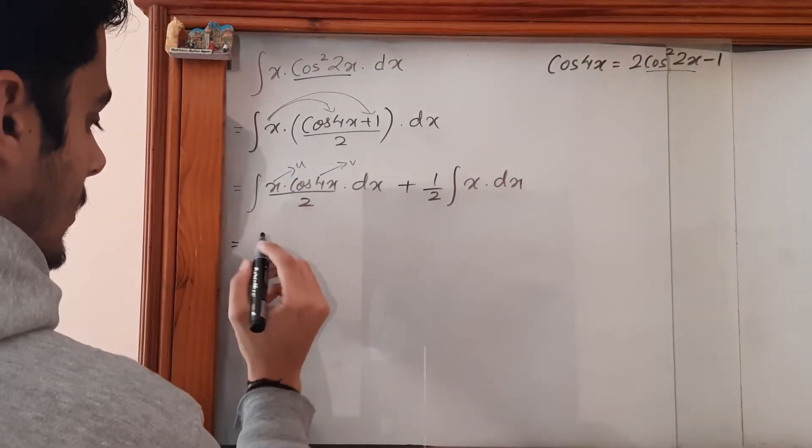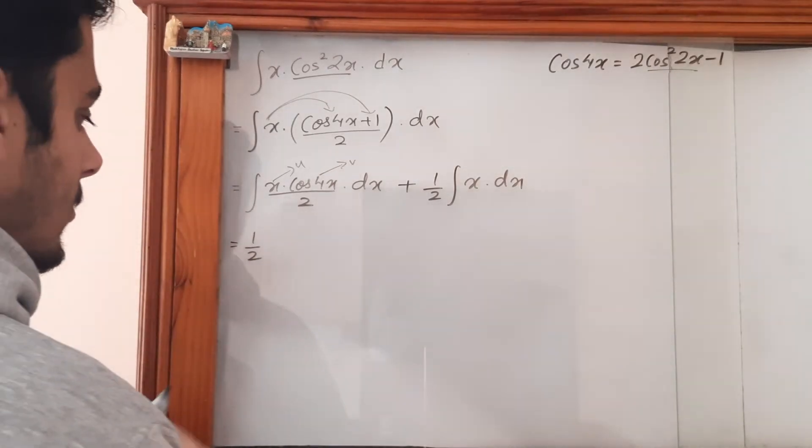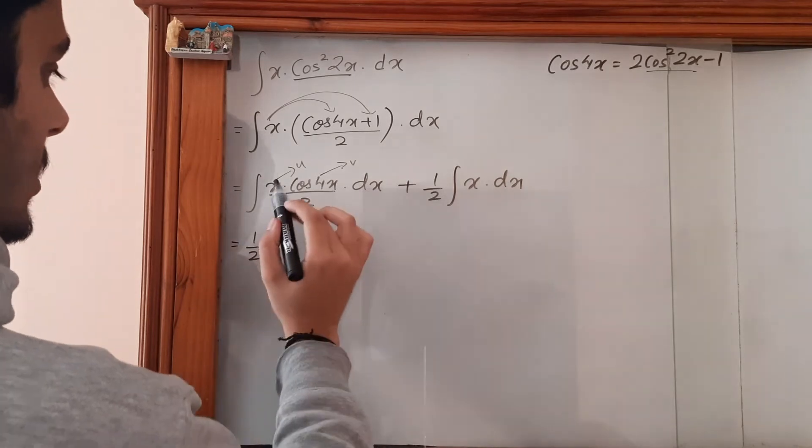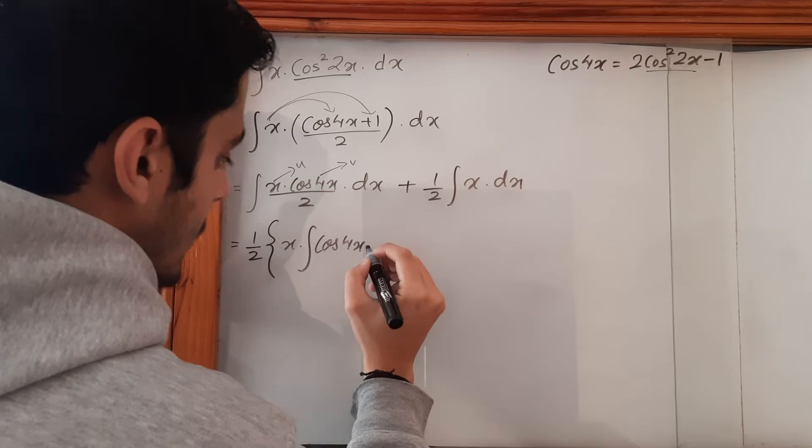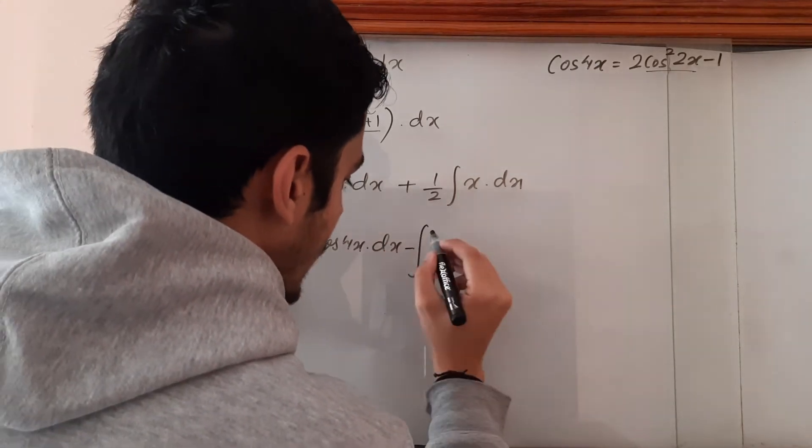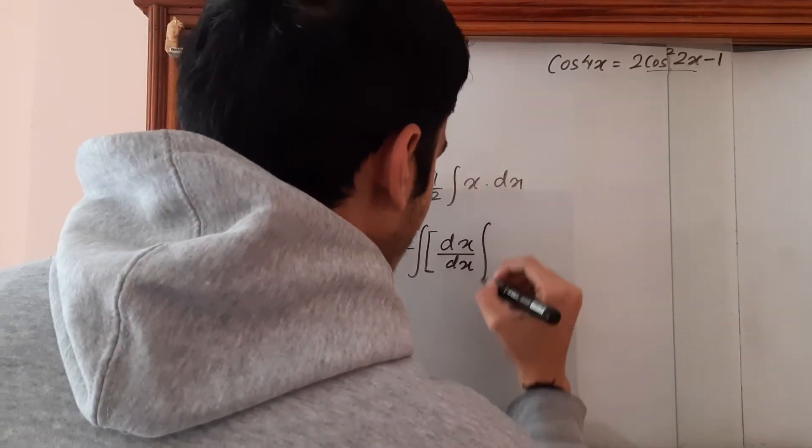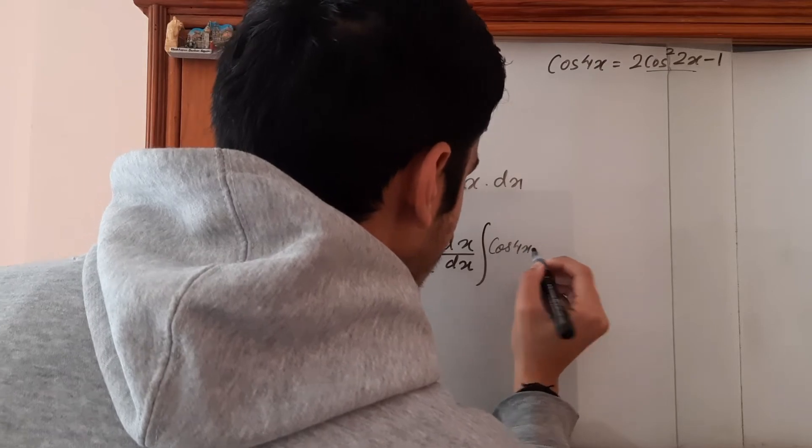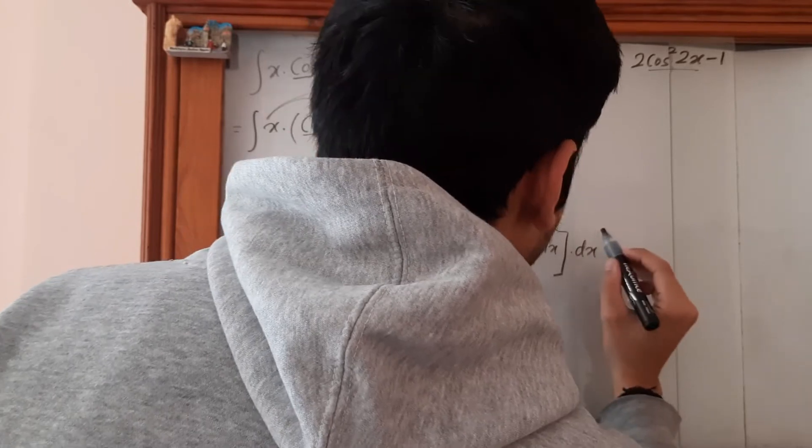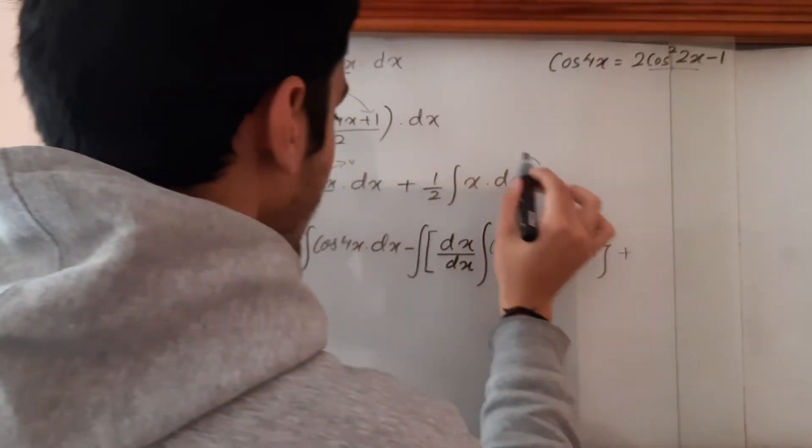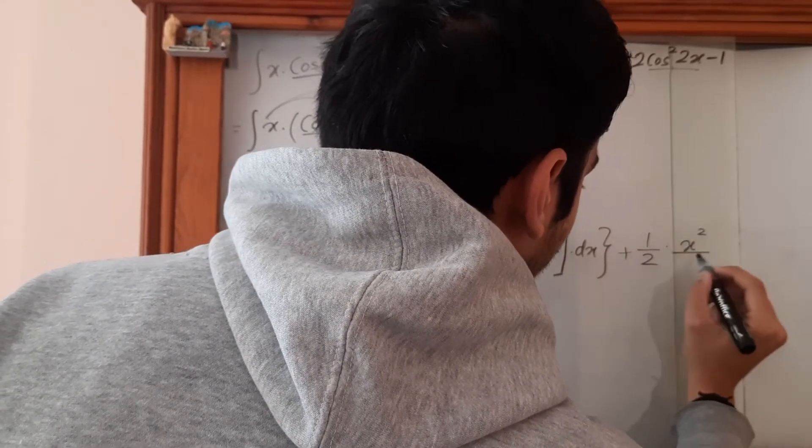So 1/2 comes outside and let's make curly brackets. This is u—it comes outside—times ∫cos(4x)dx minus ∫[dx/dx · ∫cos(4x)dx]dx, plus 1/2 times x²/2.